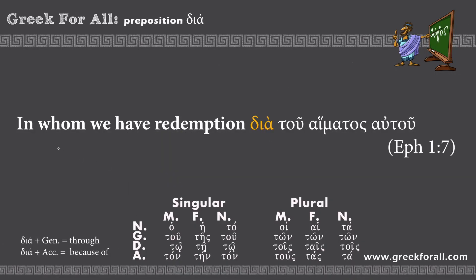A beautiful example from Ephesians: 'In whom we have redemption dia tou haimatos autou.' This is our preposition followed by 'tou haimatos.' The ending is genitive singular neuter, so dia means 'through' — through his blood. A note on this noun: any Greek word ending in -ma is neuter gender, third declension. In the genitive form these words have the ending -matos, for example 'haimatos.'